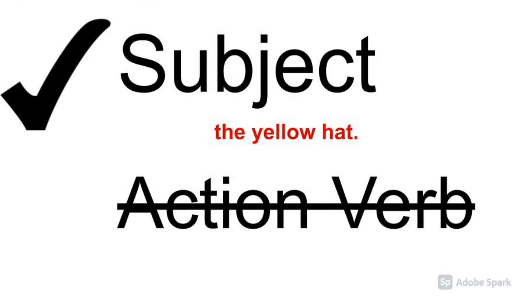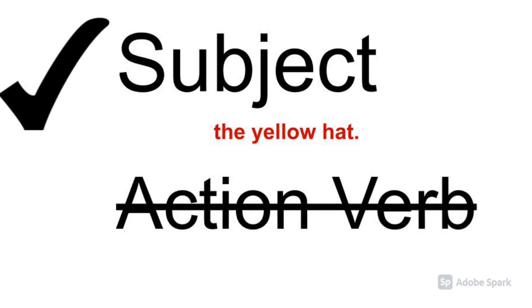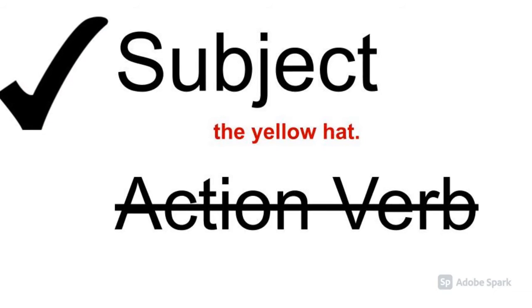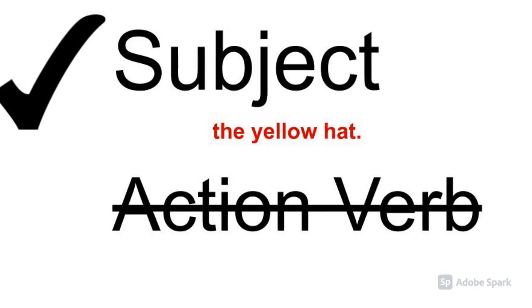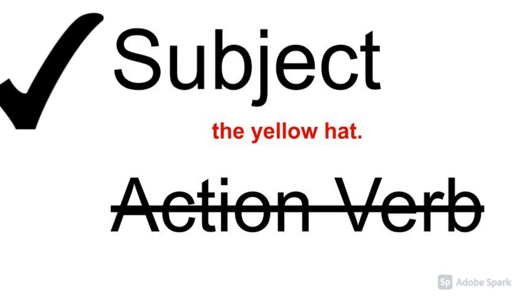Our next practice sentence is 'The yellow hat.' Here come our two questions again. Is there a subject? Yes, hat. Is there an action verb? No. Yellow isn't an action word, and there are no other verbs. This is a fragment. The hat isn't doing anything.